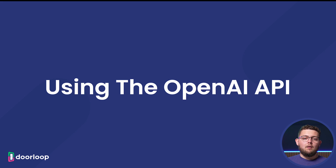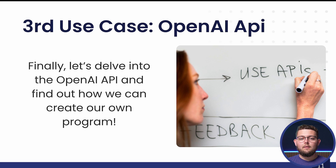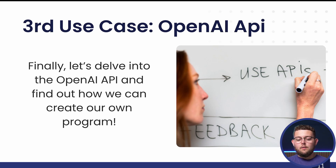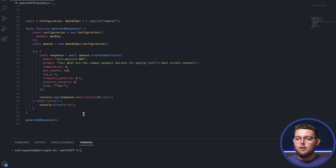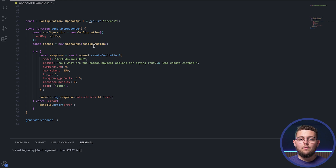Now let's get into the more technical example: how to use the OpenAI API. Please note that this solution is more complicated and requires knowledge of programming languages and APIs. If you're not familiar, we recommend contacting a developer or IT person to help. For this example we're using a simple JavaScript program that makes a call to the OpenAI API and gets a response. Here we can see a snippet of JavaScript code that installs the OpenAI packages, generates a prompt, sends it to the API, and waits for a response.